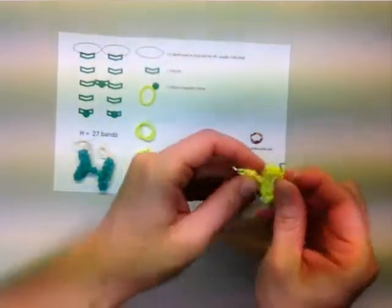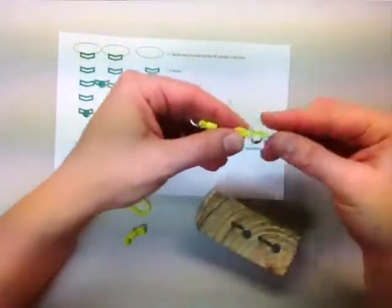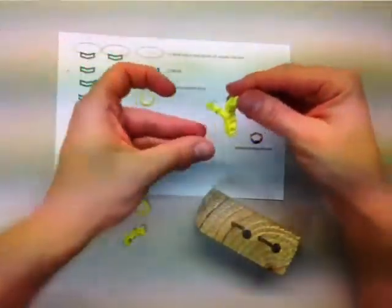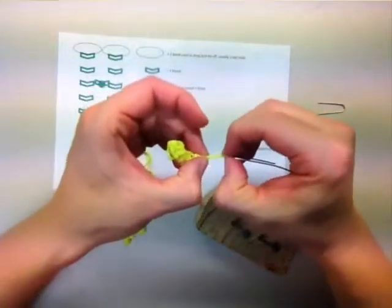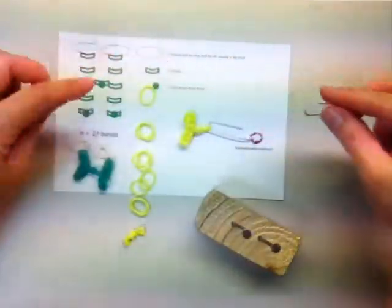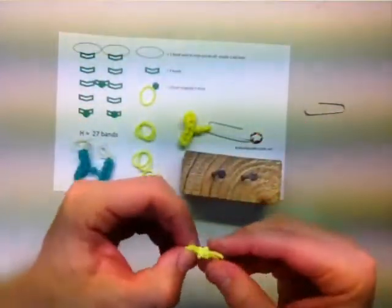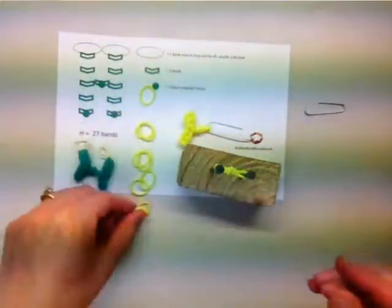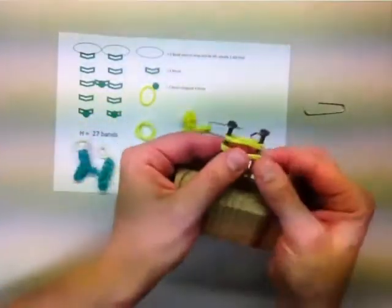Now we will do the other side of the H. It will be a mirror image of the first side. Add one of the prepared bands to the loom, then add two more bands to the loom and we will weave as normal. We will continue stitch two of the side part with just a regular stitch of two bands.